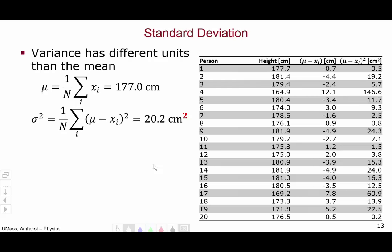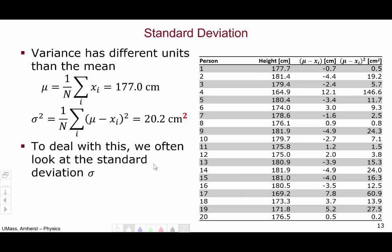Now, variance has different units than mean, as we've already seen. The mean for this data set is 177.0 centimeters, while the variance is 20.2 centimeters squared. It's very difficult to compare numbers with different units. So to deal with this, instead of looking at the variance, we look at the standard deviation, which we represent by the Greek letter σ. So the standard deviation is the square root of the variance. This is why we represent variance as σ². In this example, to get the standard deviation, we take the square root of the variance, so the square root of 20.2 centimeters squared, to give us 4.49 centimeters. Now we have two quantities that are both in centimeters, and allows us to compare them.